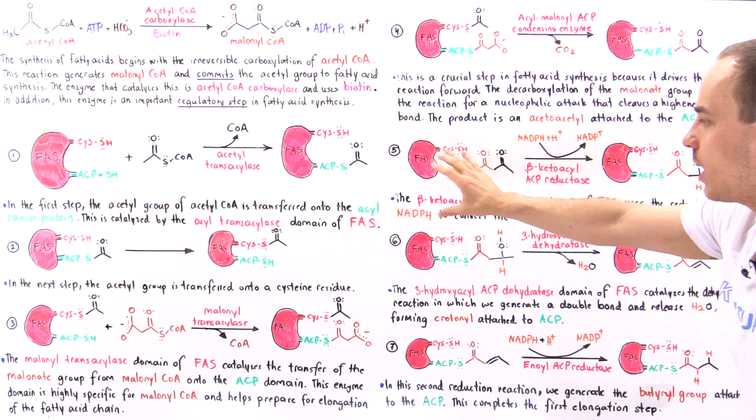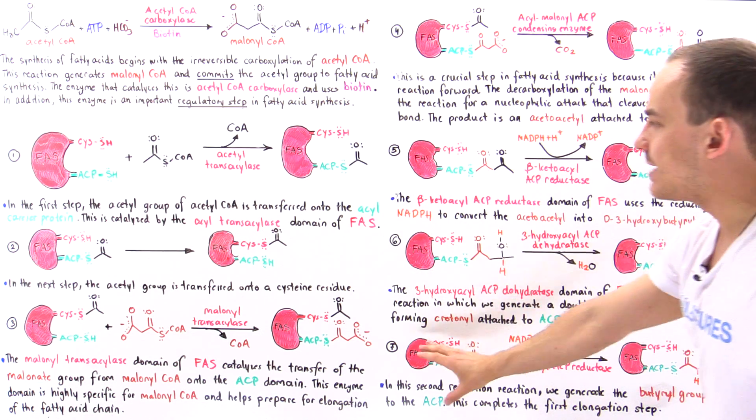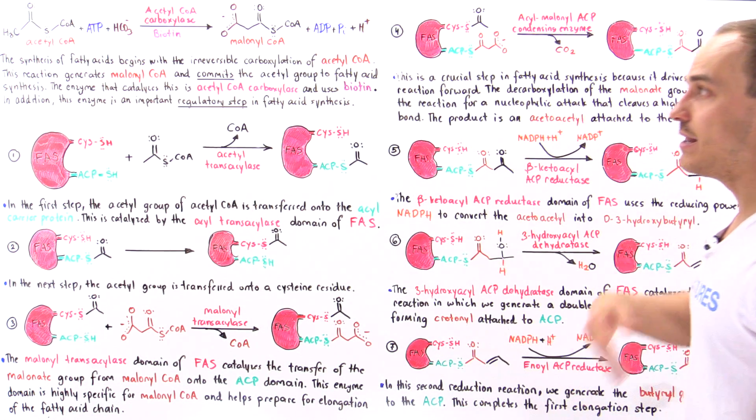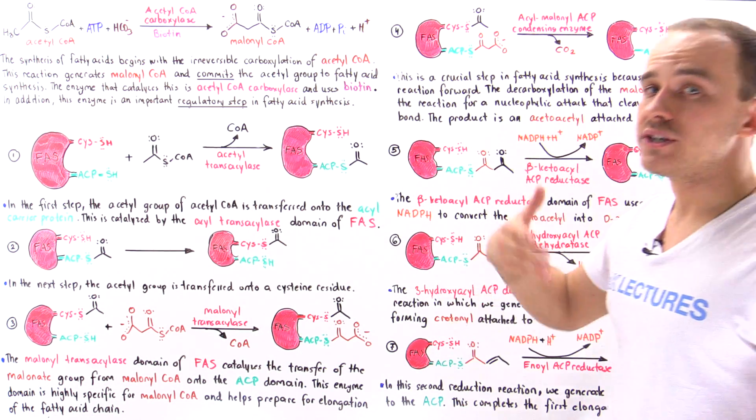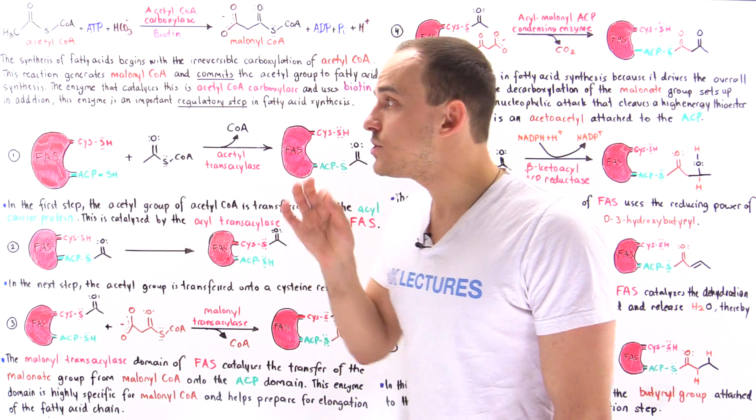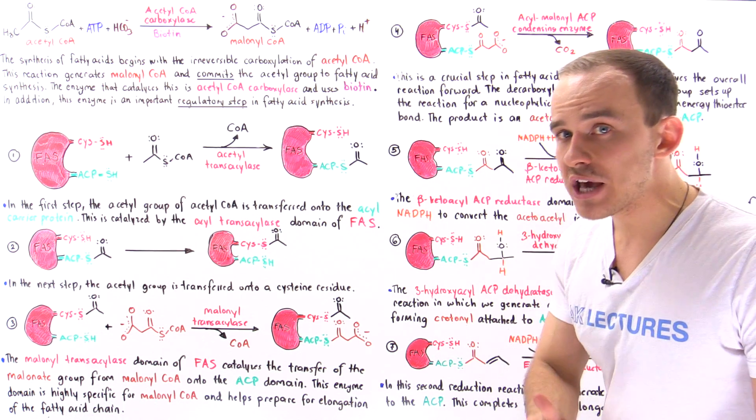We have a condensation, reduction, dehydration, and a second reduction step, and now we'll generate a six-carbon intermediate. And this will take place five more times until we generate that 16-carbon palmitoyl intermediate molecule.